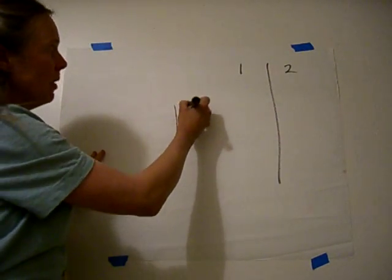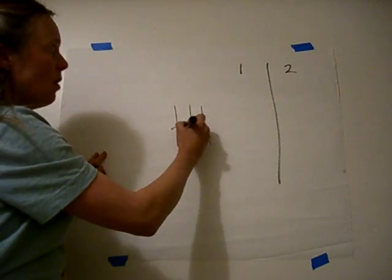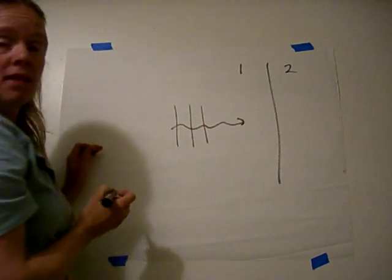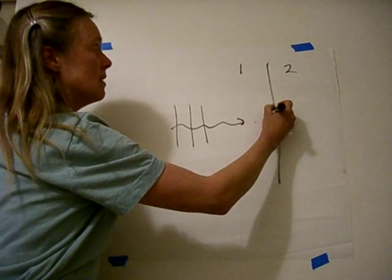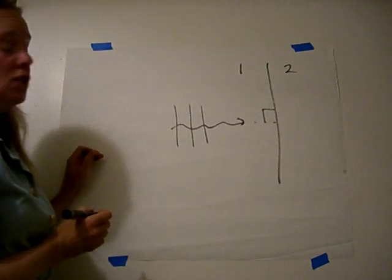A plane wave, here are the plane wave fronts, is propagating towards this boundary and it's normally incident. That means that it comes in at a 90 degree angle here.